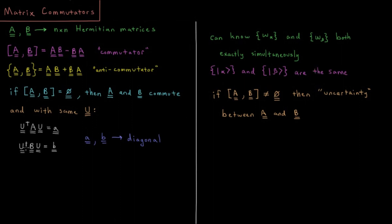And what this means is that we can diagonalize both of them with the same matrix. We can diagonalize both of them at the same time. So we can know the eigenvalues of each of these two matrices, both at the same time to exact precision. We can know both of them exactly simultaneously.